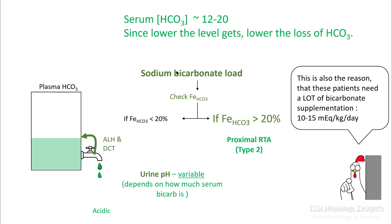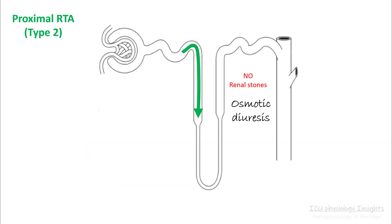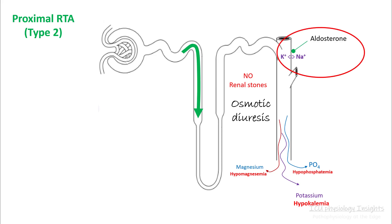This also helps understand why these patients need a lot of bicarb supplementation — as you keep giving them bicarb, they keep losing it. In proximal RTA, it's always a catching game; you just keep giving sodium bicarb so they don't suffer from chronic acidosis. Since there's a lot of sodium bicarb load in the distal convoluted tubule and collecting ducts, you have osmotic diuresis, so renal stones do not form there. Your aldosterone mechanism is stimulated, and you exchange sodium for potassium, losing a lot of potassium in the urine — resulting in hypokalemia.